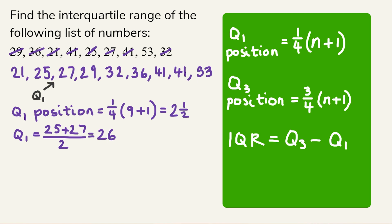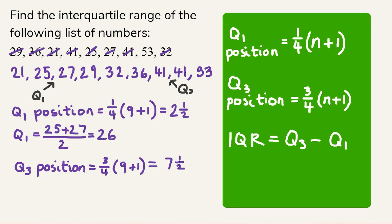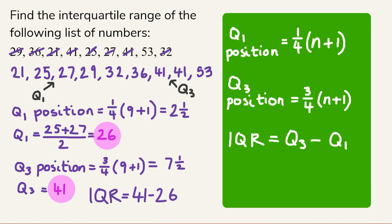To find the position of the upper quartile, we do three quarters of (n + 1) — three quarters of 10 — which is 7.5. So we look for the value halfway between the seventh and eighth positions. Both the seventh and eighth values are 41, so the upper quartile is 41. With a lower quartile of 26 and an upper quartile of 41, the interquartile range is 41 minus 26, which is 15.